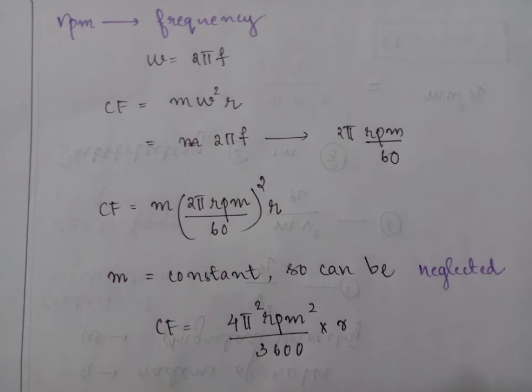We consider m as constant, that is mass is constant, so it can be neglected. Then the final equation is centrifugal force equals 4 pi squared RPM squared divided by 3600 into r.